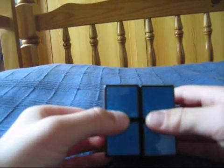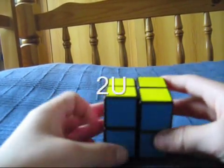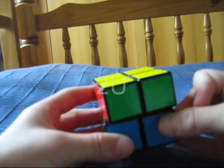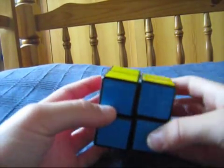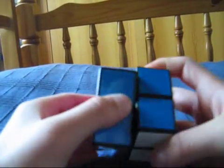And with a 2 in front of it, it means you move that face 180 degrees. So 2U would be that, 2L would be this, and 2R would be this.